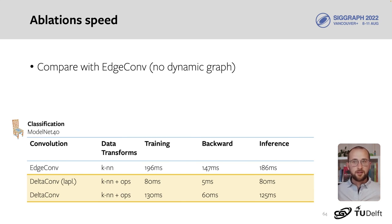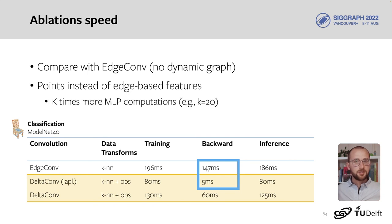Now look, for example, at the comparison of the backward pass, a 30 times improvement. The reason for this is simple. DeltaConv computes directional features at each point instead of each edge. If you have 20 edges per point, EdgeConv applies the multilayer perceptron 20 times for each point. This is hard to scale up to larger point clouds with more points per neighborhood.